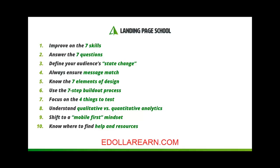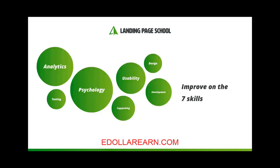Now before we wrap up, let's dig in a bit deeper on each of these takeaways. In Part 1, I shared these 7 skills every landing page optimizer should have: Analytics, Testing, Psychology, Usability, Design, Copywriting, and Development. Maybe you're already strong in many of these areas and just want to improve a few others. That will help you not only become better at landing page optimization, but you'll have a more rounded marketing skill set as well.